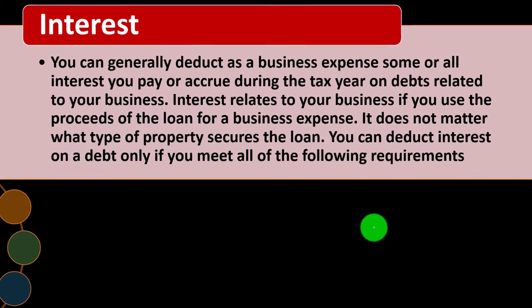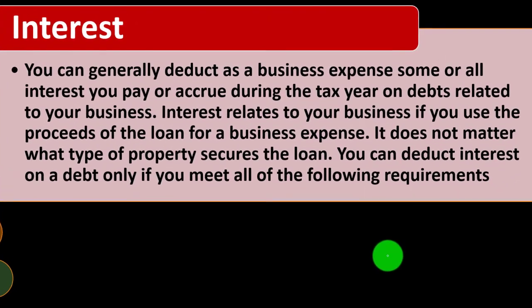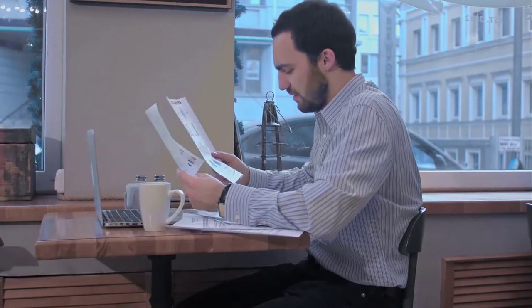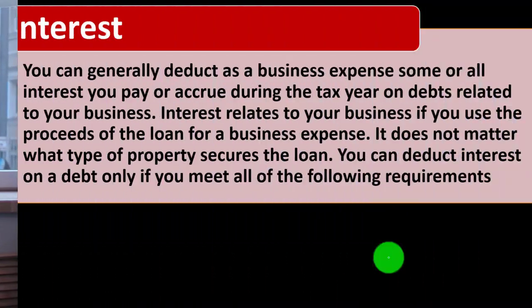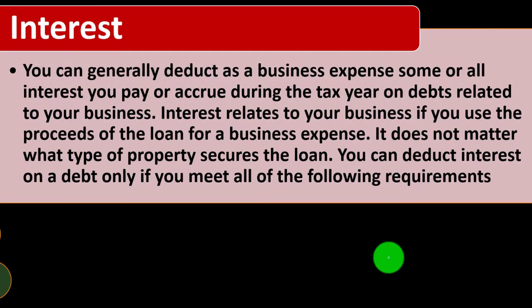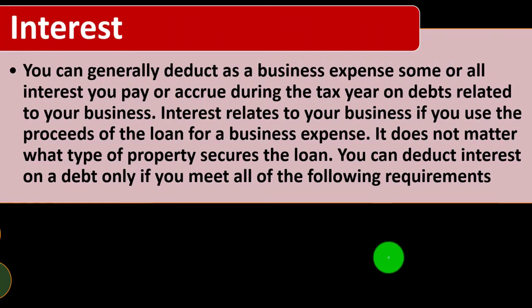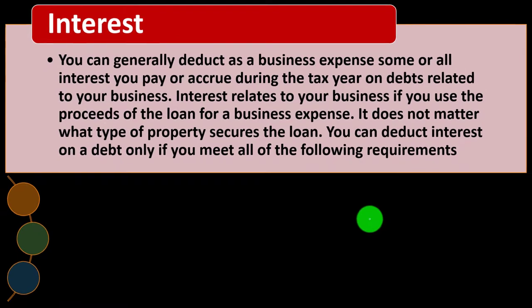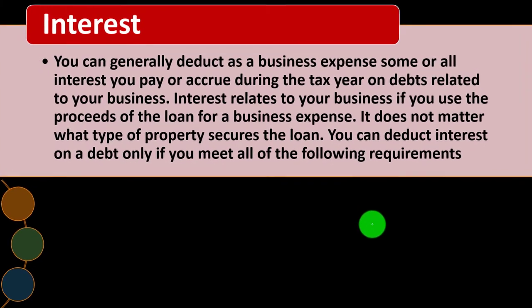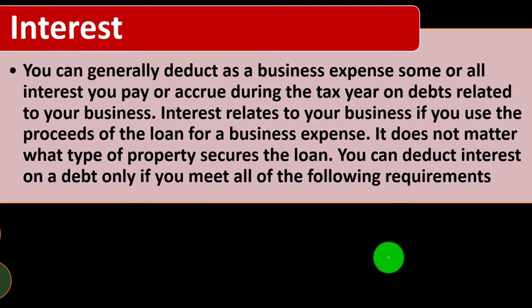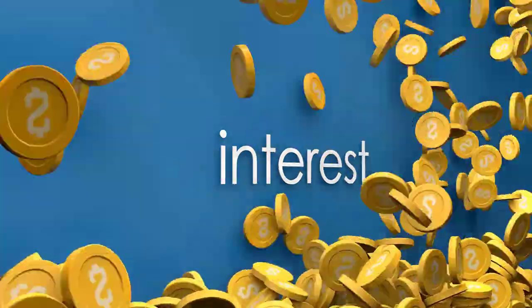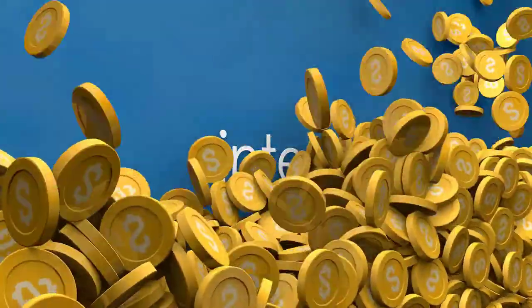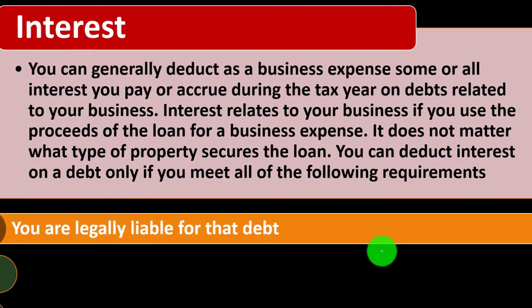Generally, if it was a business loan, the answer is yes. But some loans are more complicated. For example, if you have a mortgage on your home and you have a home office — a business area of your home — the loan is covering both a business and a personal component. In that instance, you might have to divide the interest between what's deductible on Schedule C and possibly Schedule A.